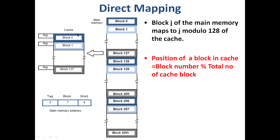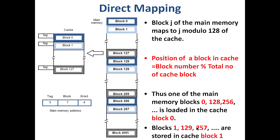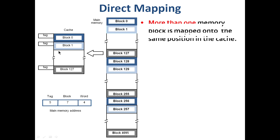If block number is 0, it is placed in cache block 0. Blocks 0, 128, and 256 all get placed in the same cache block 0, because they all give remainder 0 when divided by 128. Similarly, 2, 130, and 258 are all placed in cache block 2.